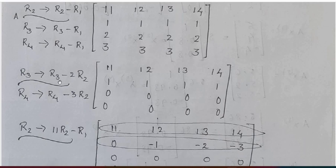R3 changes to R3 minus 2 times R2, and R4 changes to R4 minus 3 times R2. Therefore, R3 and R4 will be entirely zero — both rows become zero. To get row reduced echelon form, I will make this element 0 by applying the operation R2 changes to 11 times R2 minus R1.